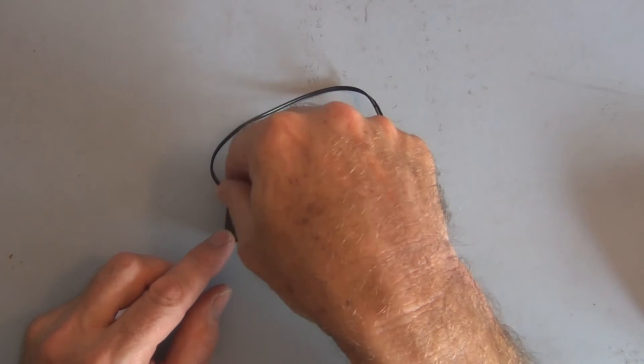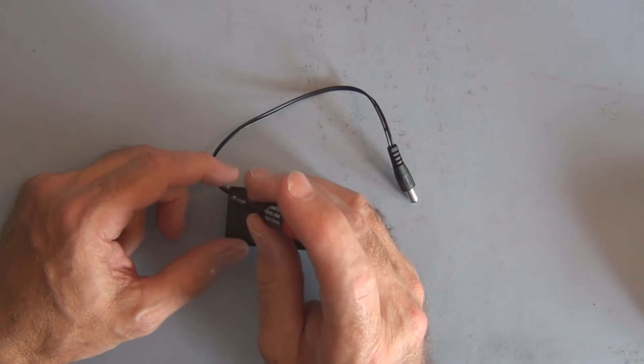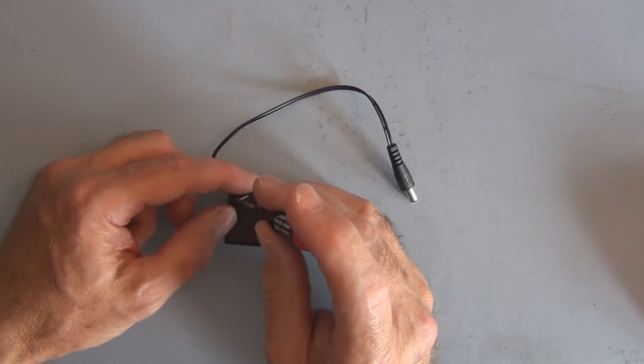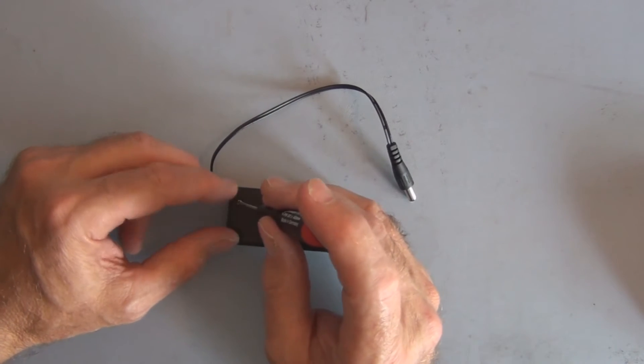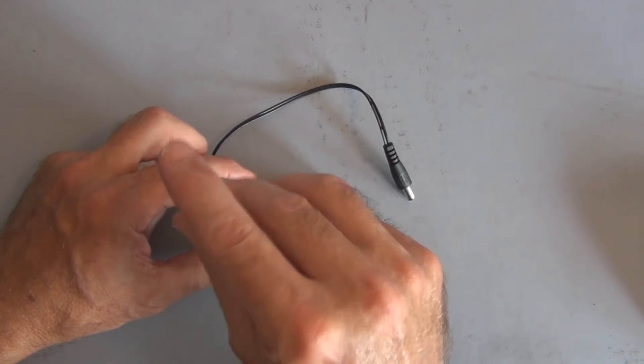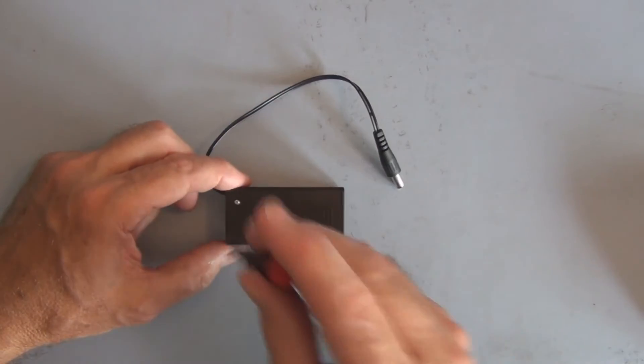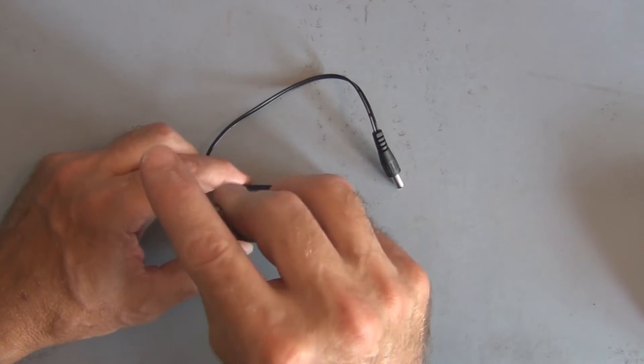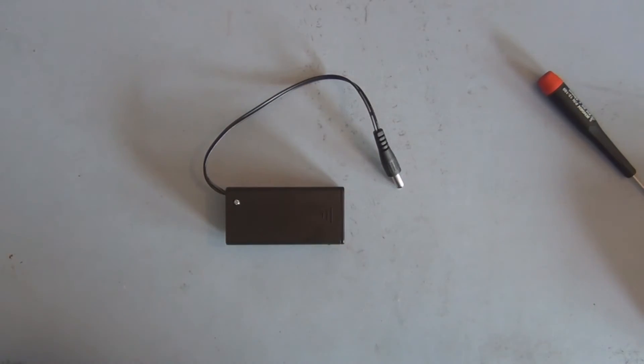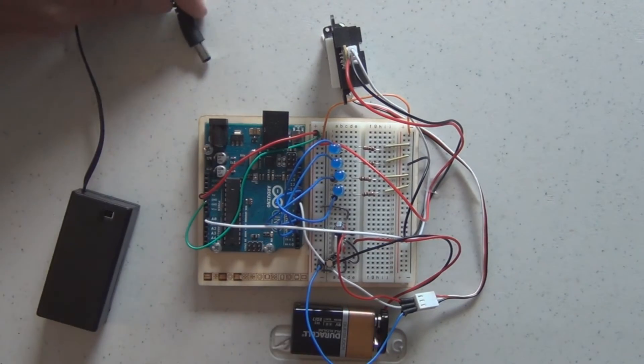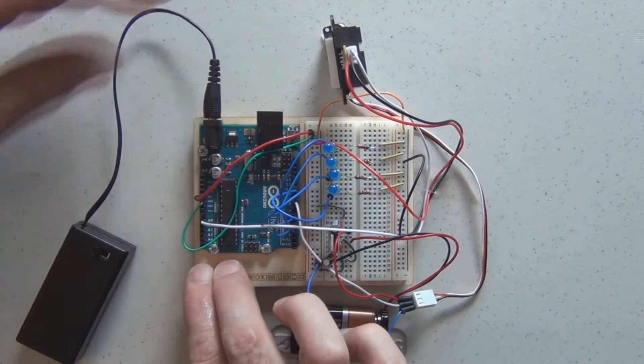And put the screw in. So I'm cutting the umbilical cord from the laptop. Now I'm not certain how much current the Arduino Uno draws or how long a nine volt battery would be able to power it. So now I can just plug in this nine volts, don't need the laptop anymore to power my Arduino Uno.